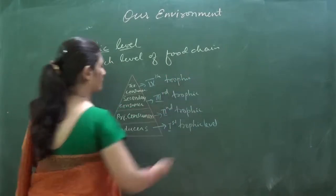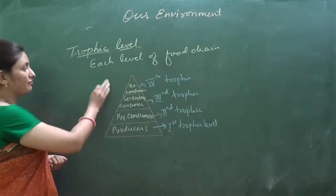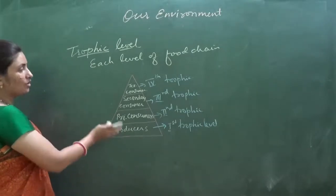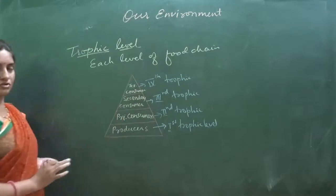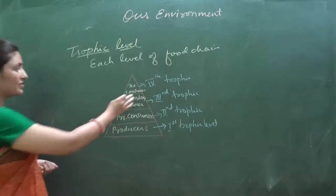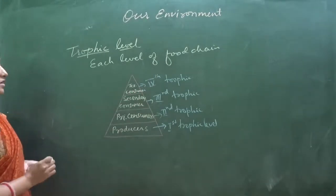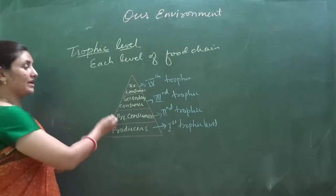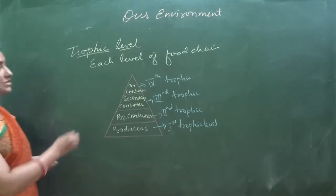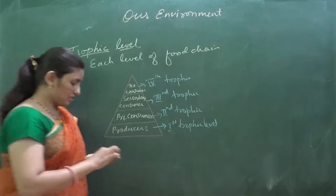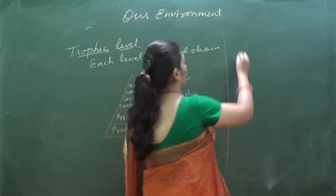A food chain will typically consist of four or five trophic levels. Most of the time it is the fourth trophic level, because as the food chain increases, the energy goes on decreasing — which we shall see in the next topic: energy flow.